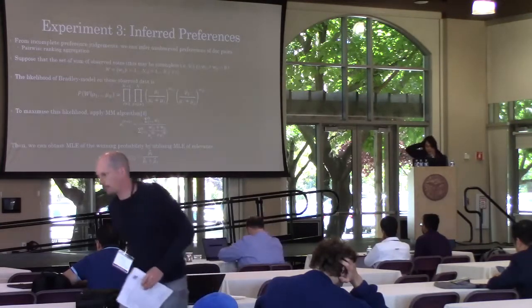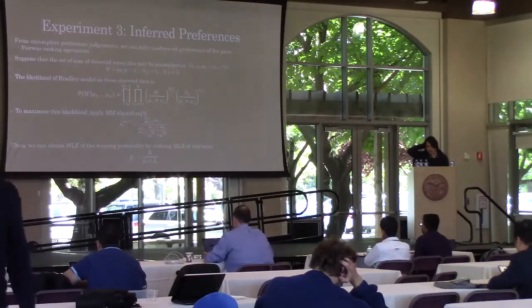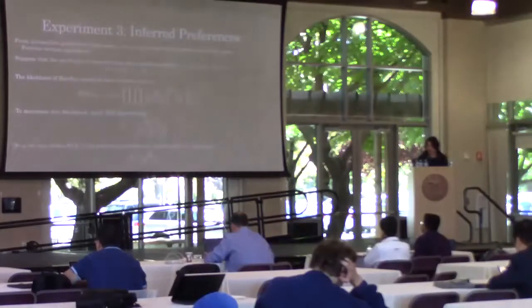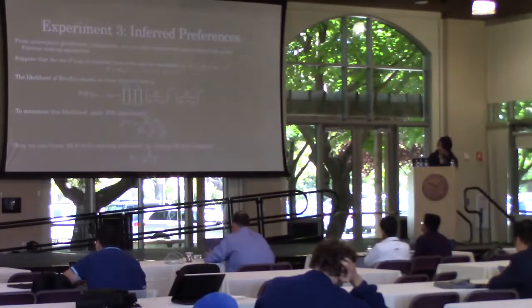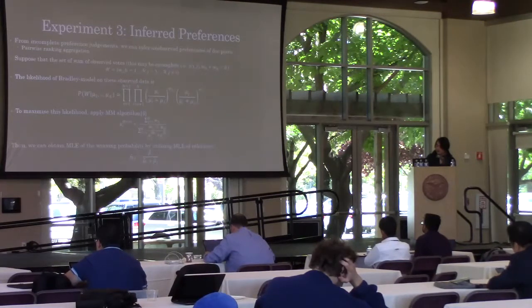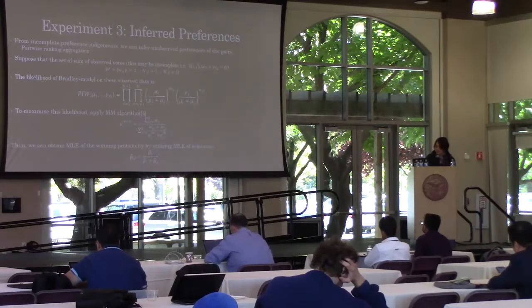Experiment 3 is a little bit complicated. Complete preference judgments are not always necessary to obtain ideal ranking. We can infer unobserved preferences of document pairs by using pairwise ranking aggregation.